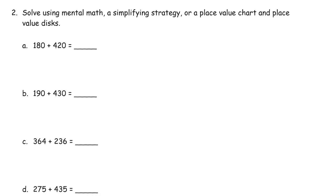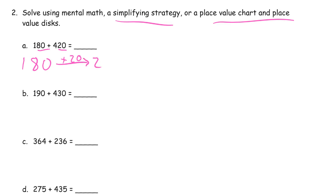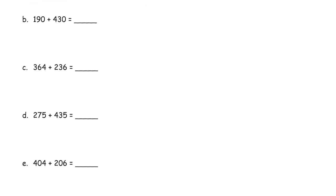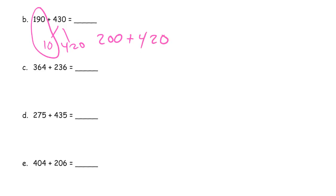Now we're solving these using mental math, a simplifying strategy, or place value chart and drawing the chip model. Here I see the 80 and the 20 — that's going to make an easy hundred. So I'm going to start by adding the 20 first, and then mentally add 200 plus 400, writing this down the arrow way. Then I'm going to add the 400. This 190 is really close to 200, so I'm thinking about 10 and 420 so that I have 200 — there's my 200 plus 420, and that's 620.